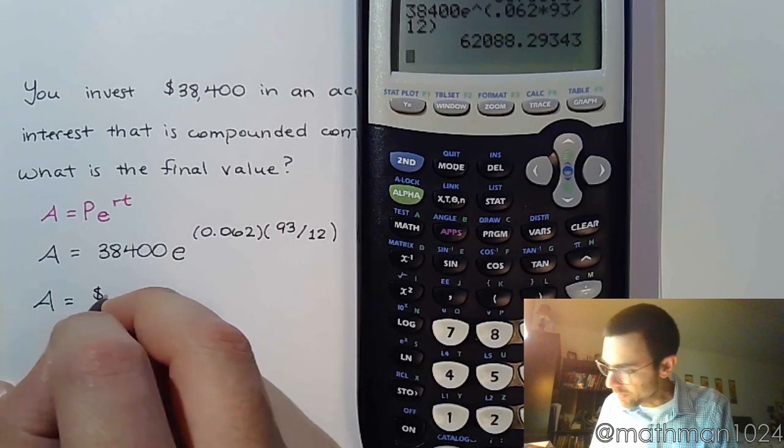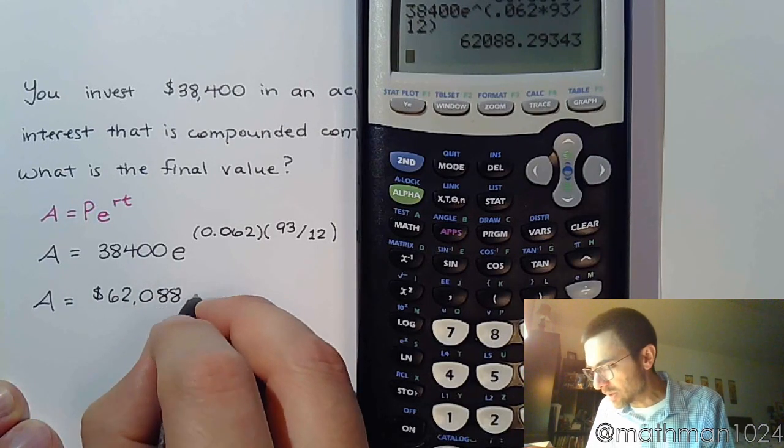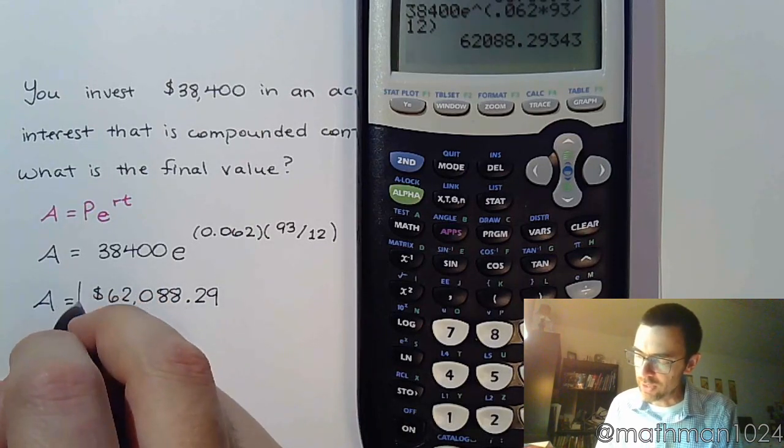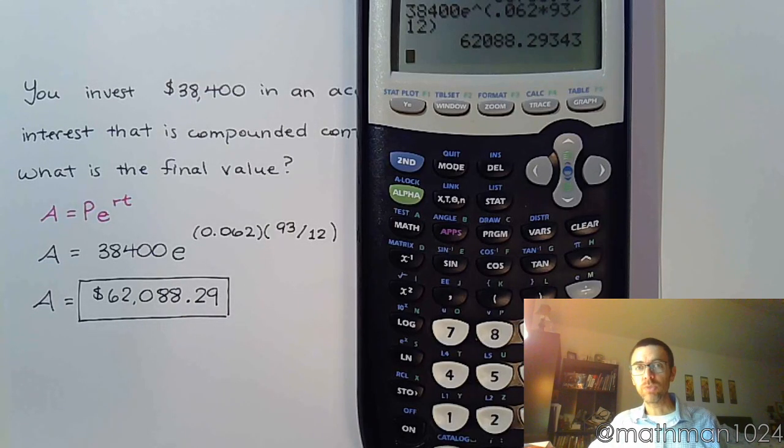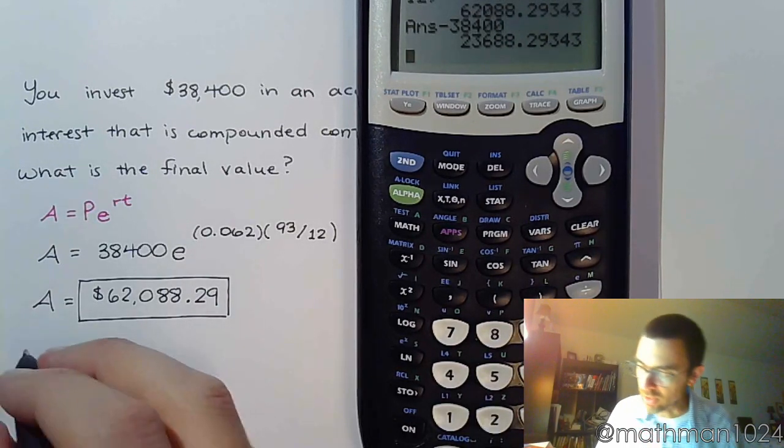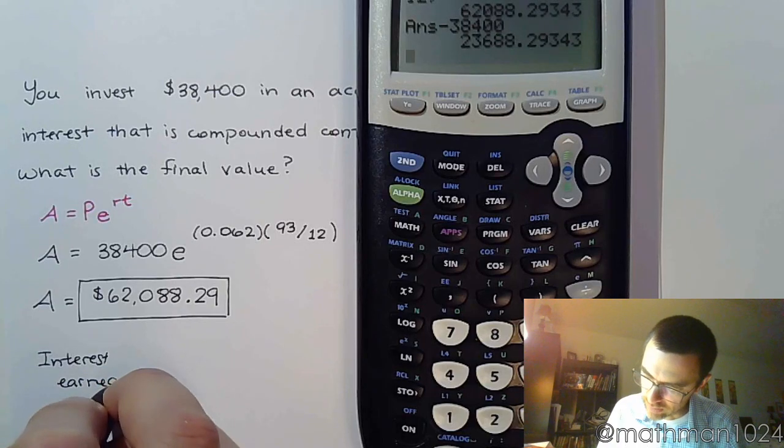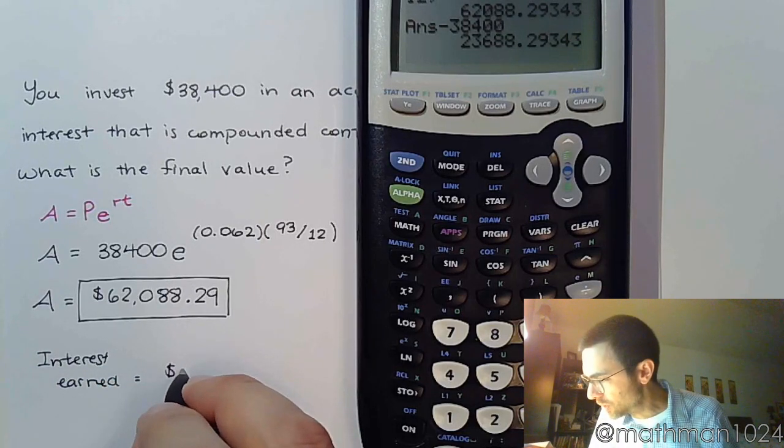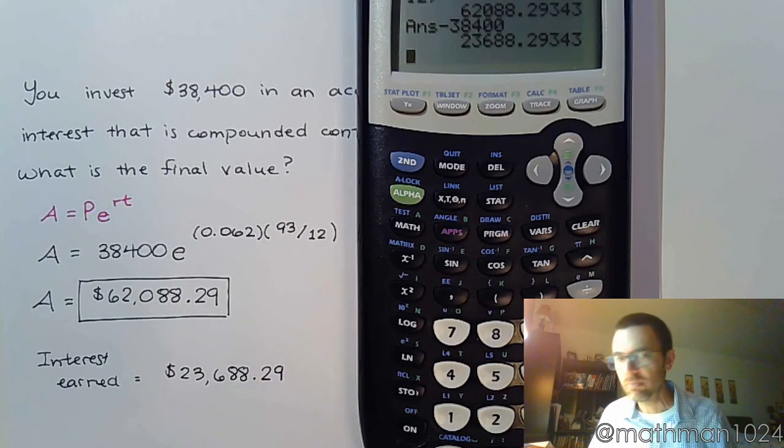So, my final amount is $62,088.29. And, so, there you have it. Just throw it into the calculator, and you get your answer. Now, even though the question wasn't asking for it, we could also find out how much interest was earned. Just by taking this value and subtracting off the $38,400 that we initially invested. So, the amount of interest earned was equal to $23,688.29.